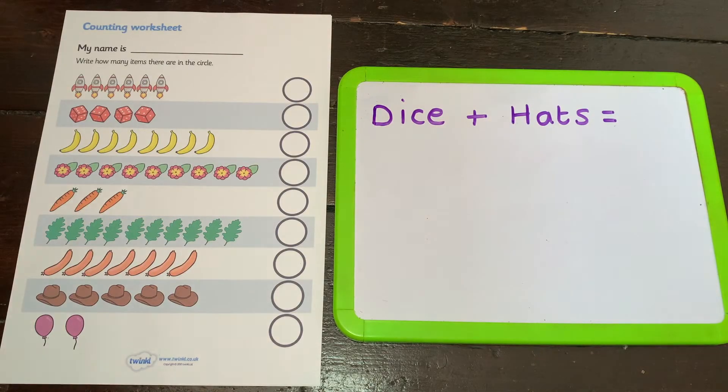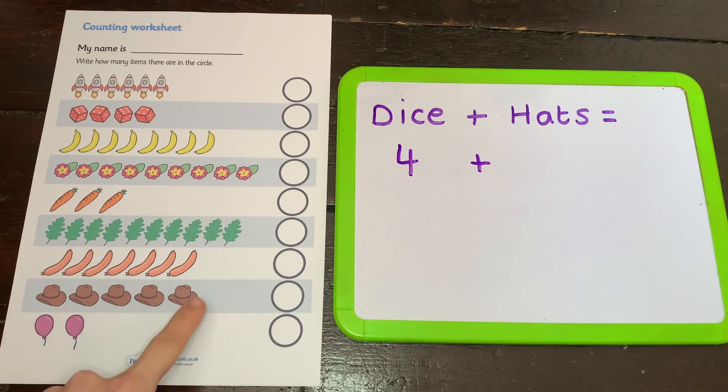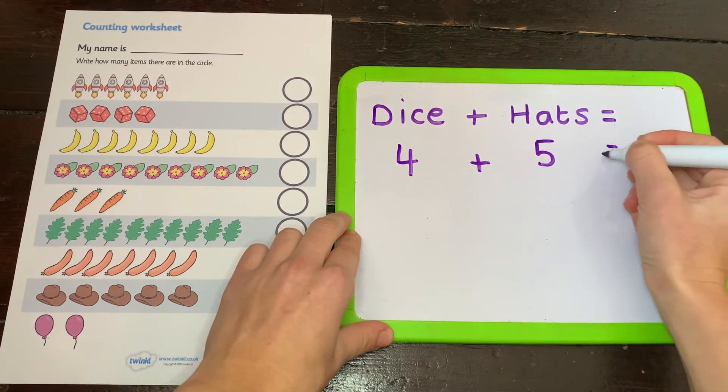There's even opportunity to practice addition skills. See if your children can add two different groups of objects together and get your children to write the number sentence and the answer.